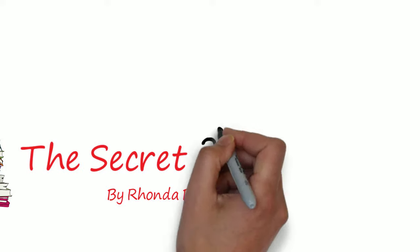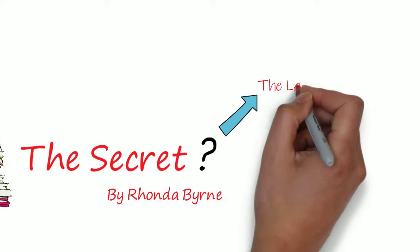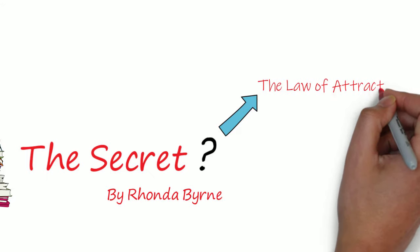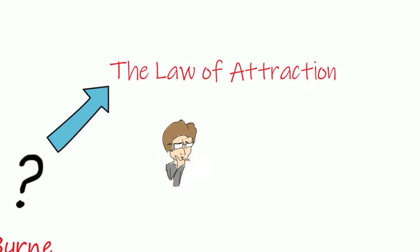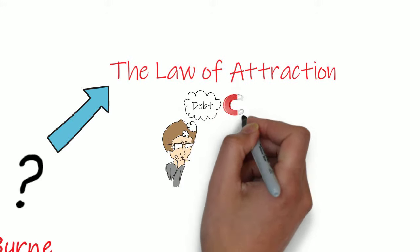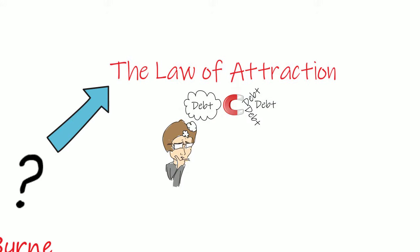So what is the secret? It is the law of attraction, and what this means is that your thoughts are magnetic and attract similar frequency thoughts and events. Thus, everything that happens to you is brought to you by your own thoughts.